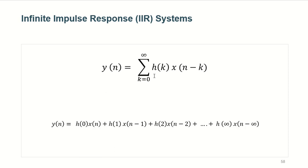Since infinite memory is not practically possible, IIR systems are implemented with the help of difference equations, which are very efficient in terms of computation and memory requirement. Also note that in FIR systems, computation becomes very inefficient when m becomes very large, since you have to calculate so many terms.